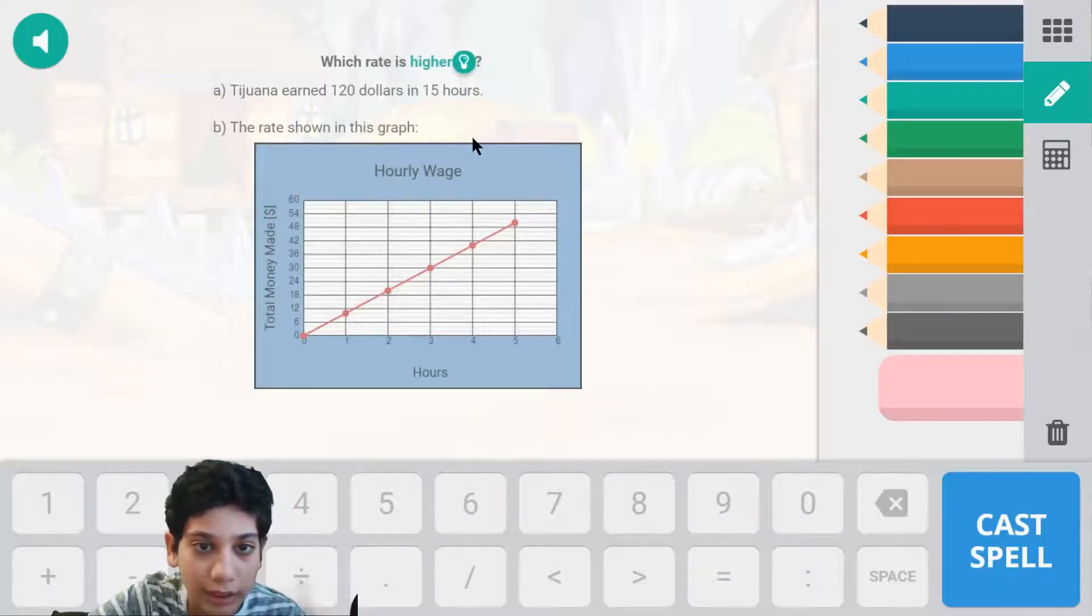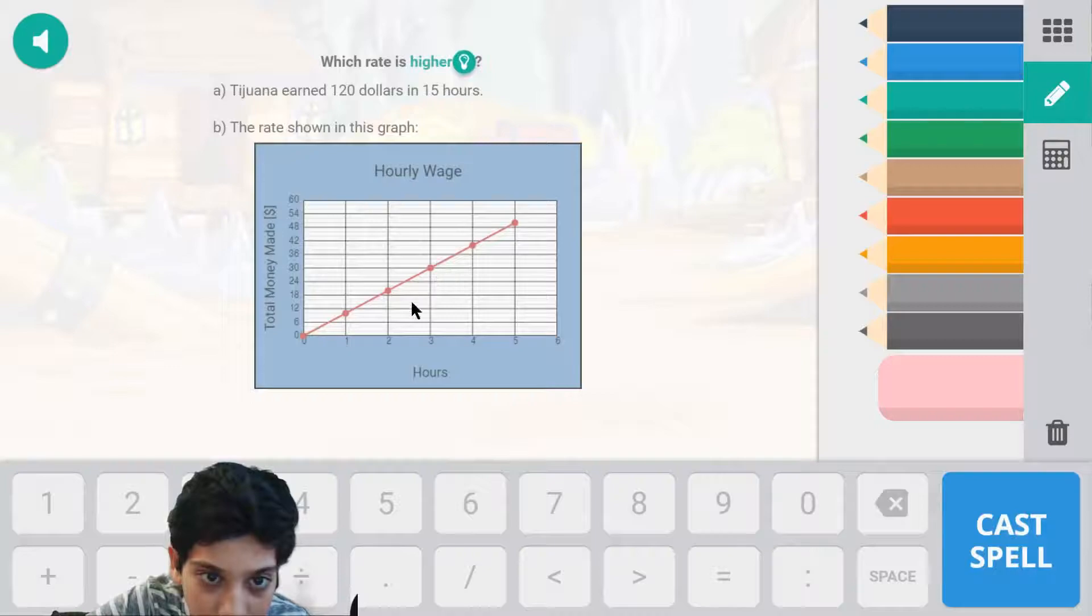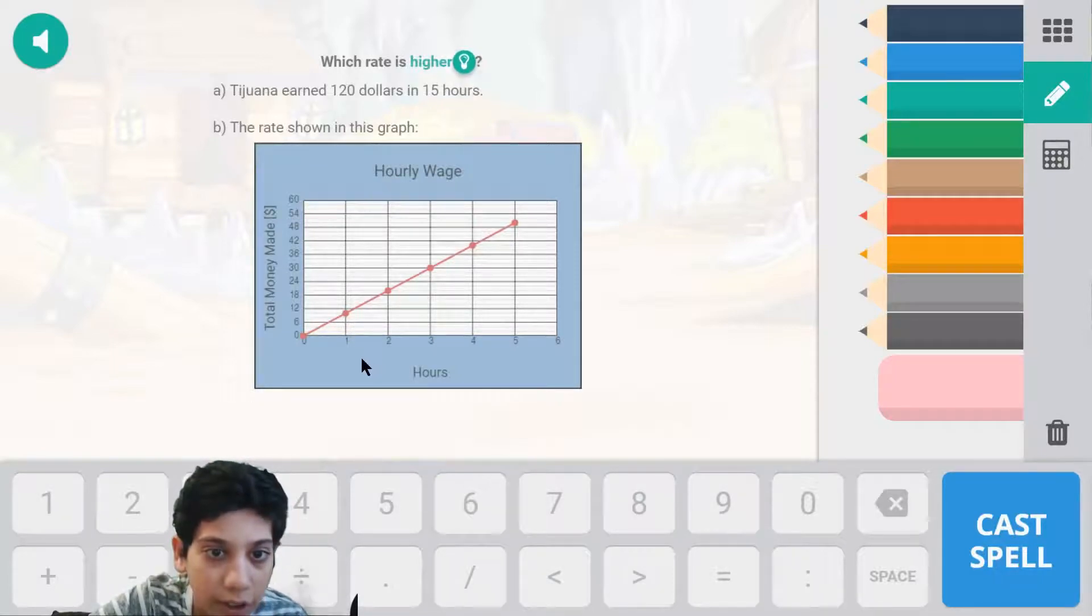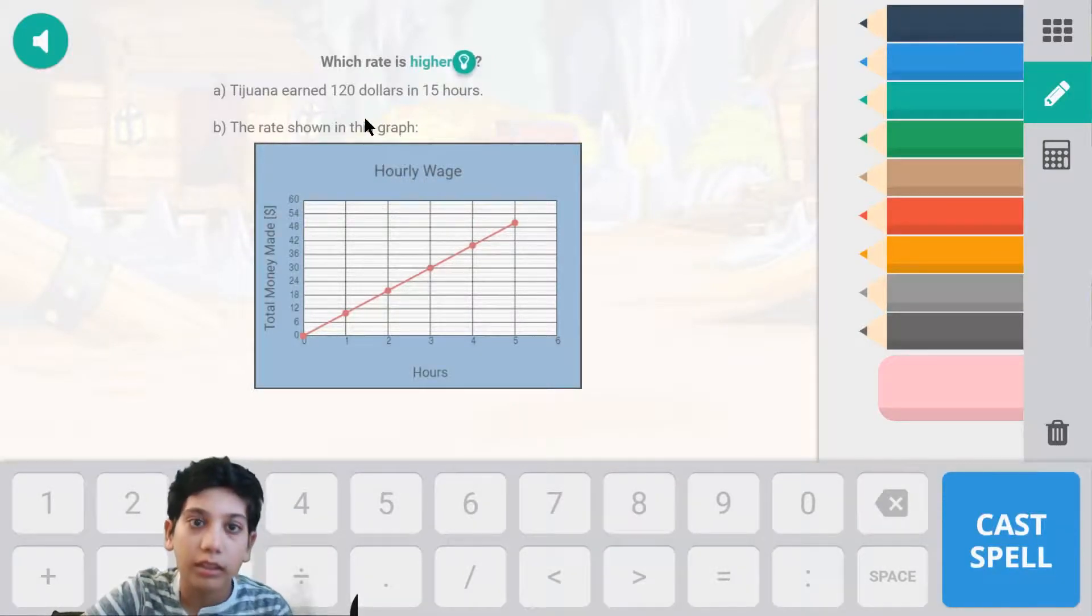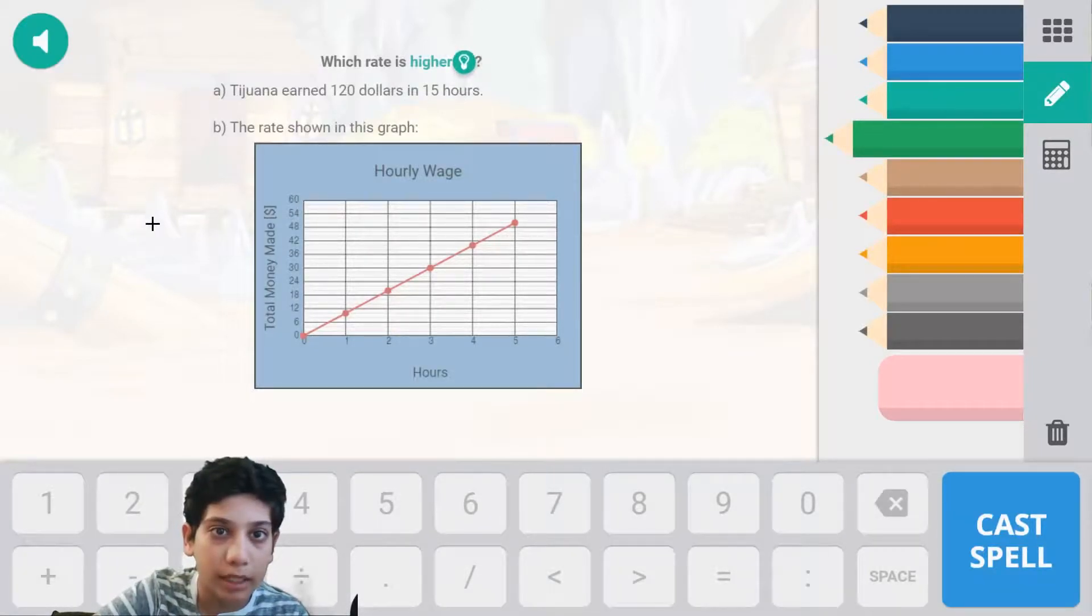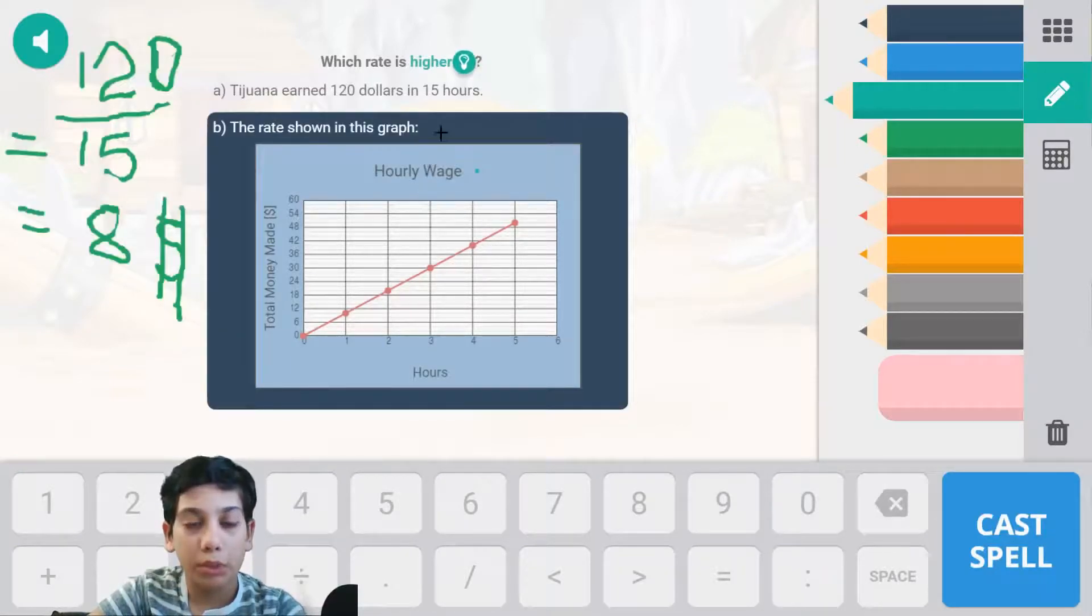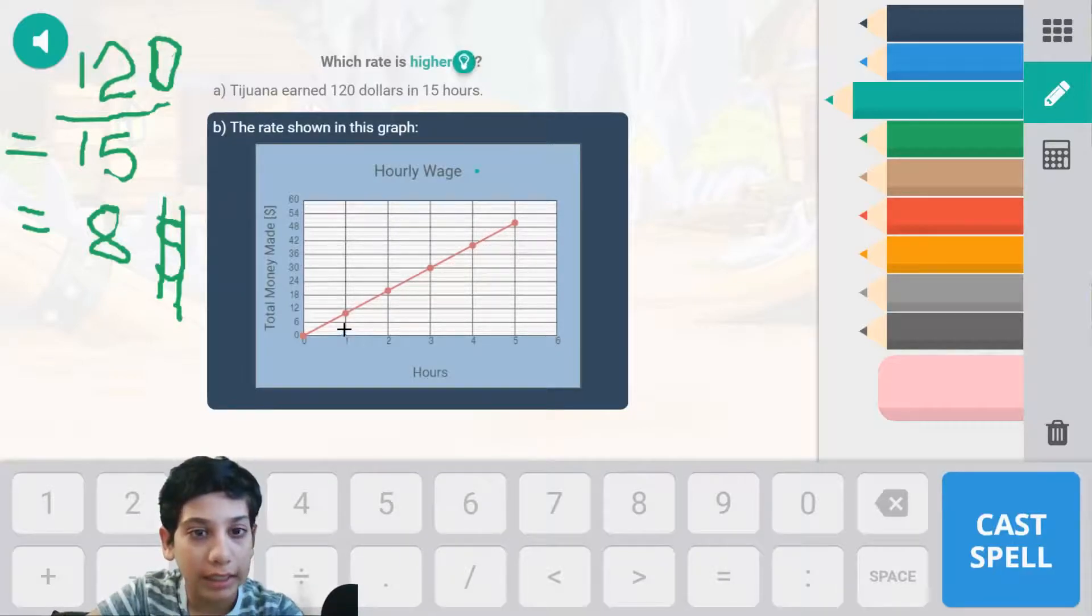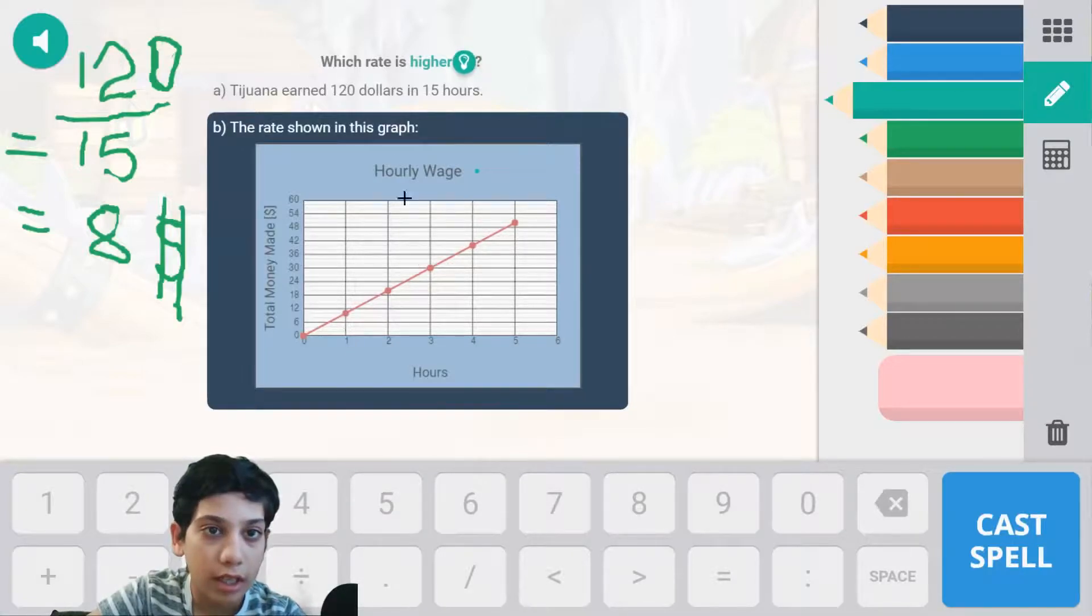So we earn 120 dollars in 15 hours or about nine dollars in an hour. So that means we first have to figure out how many dollars we earn in an hour. So 15 divided by 120. Which one gives us more money? It is B because in each hour we earn about 11 dollars.